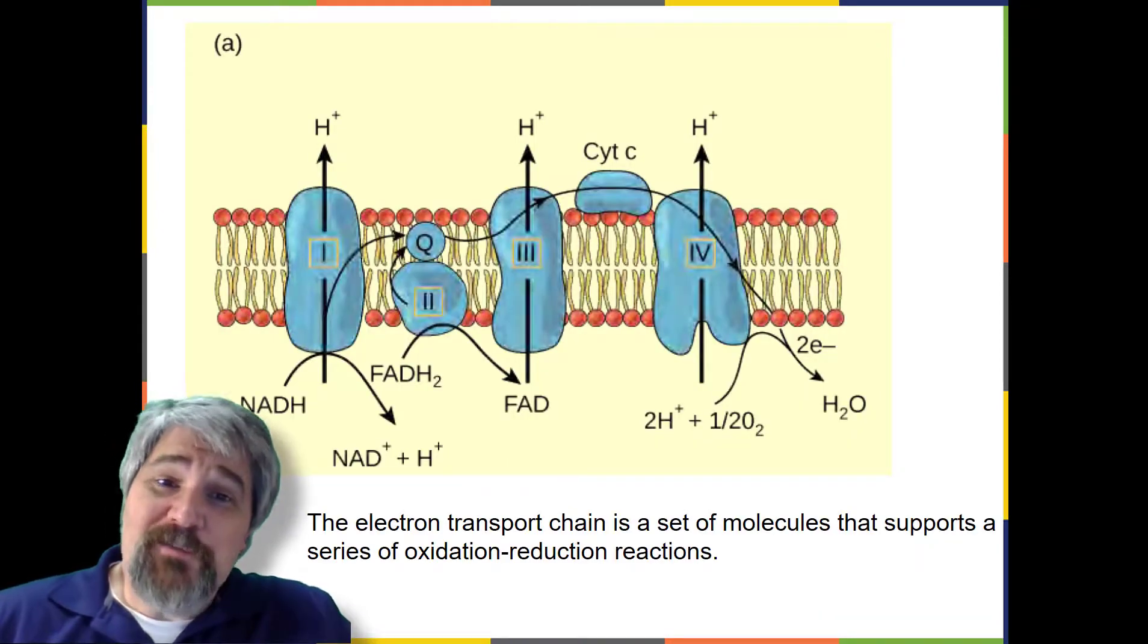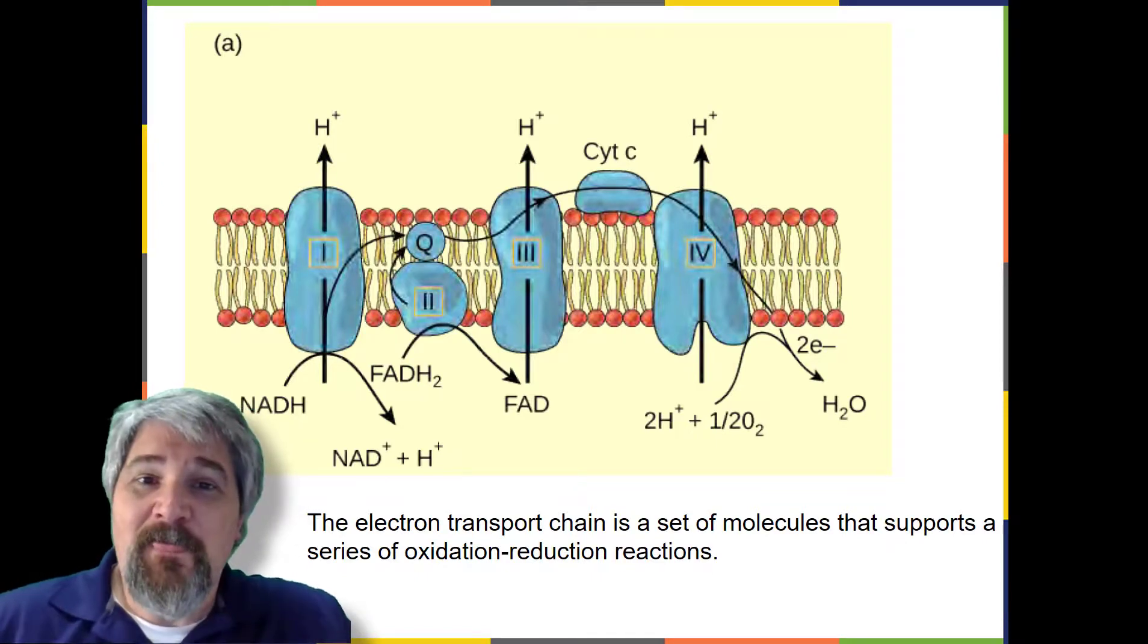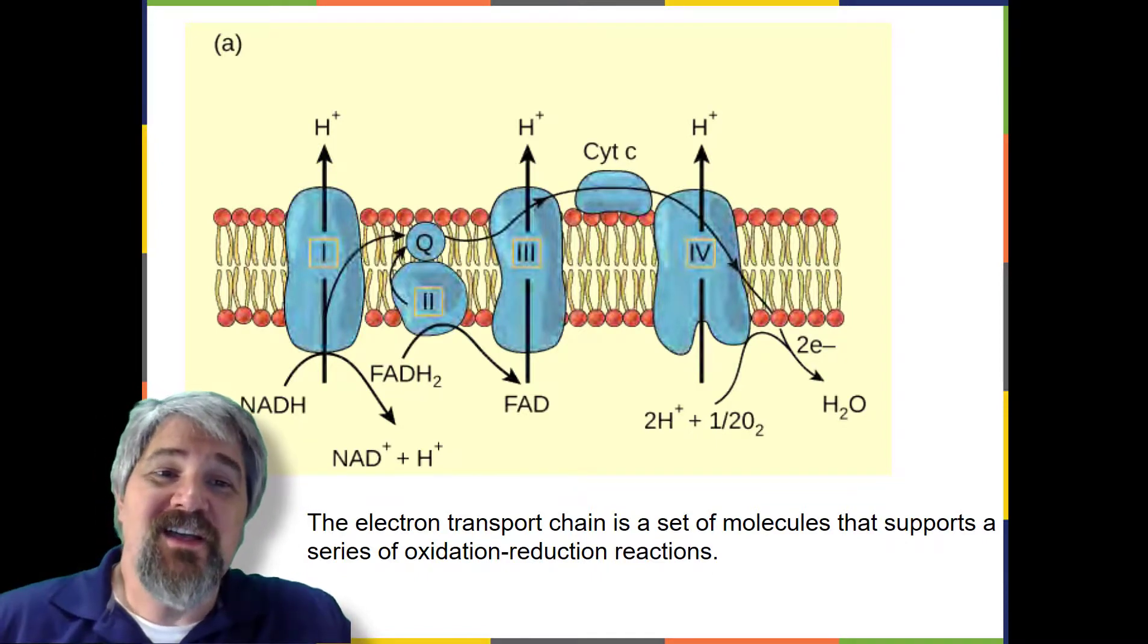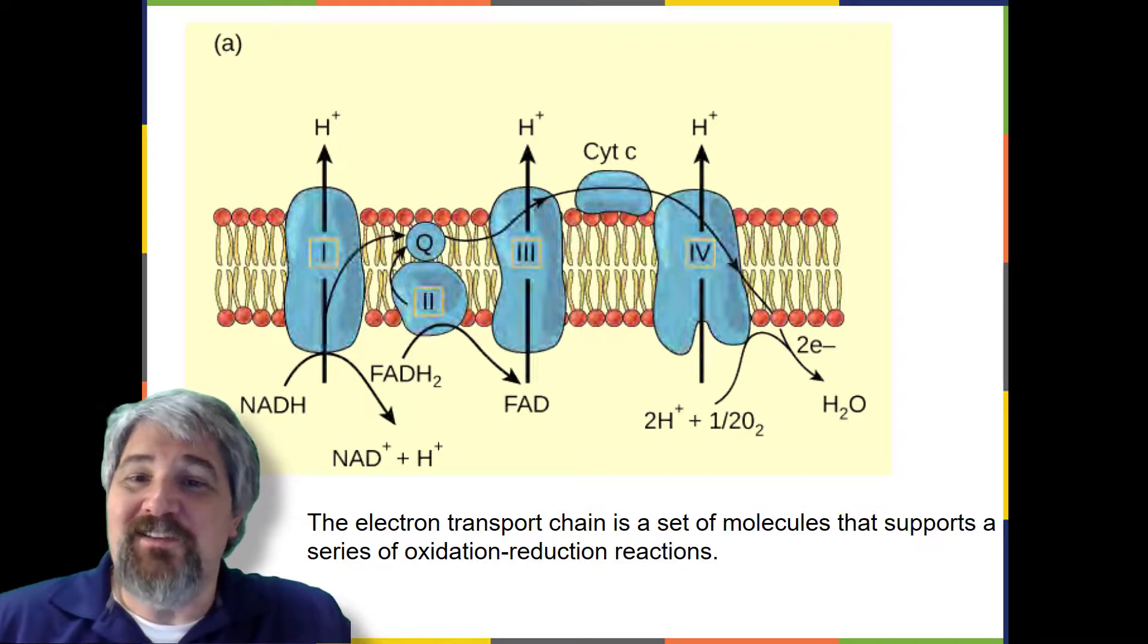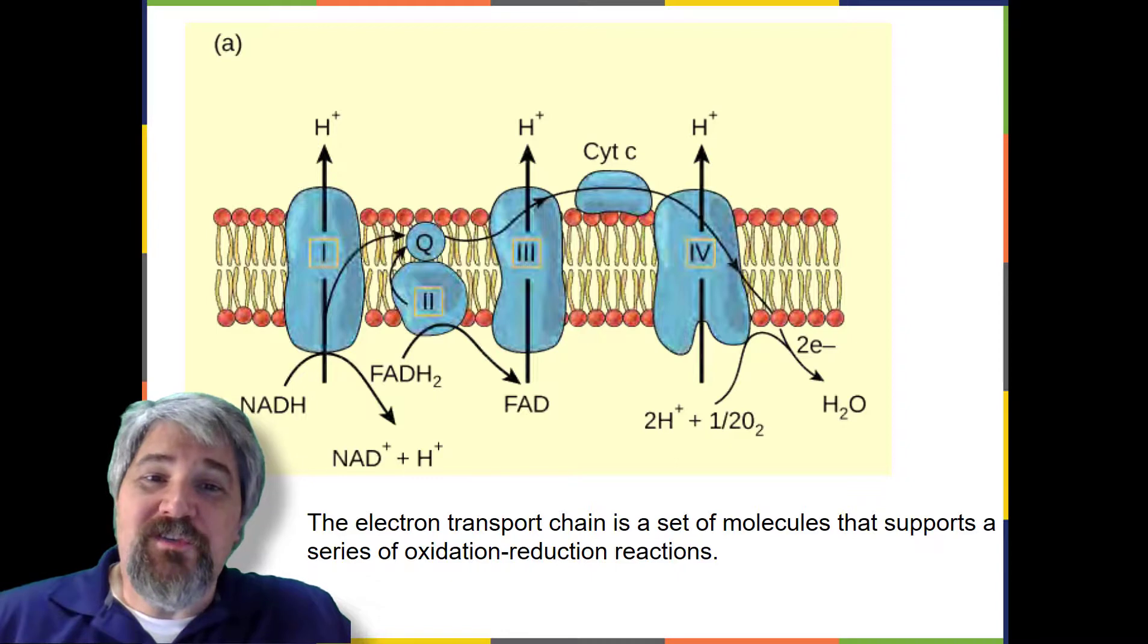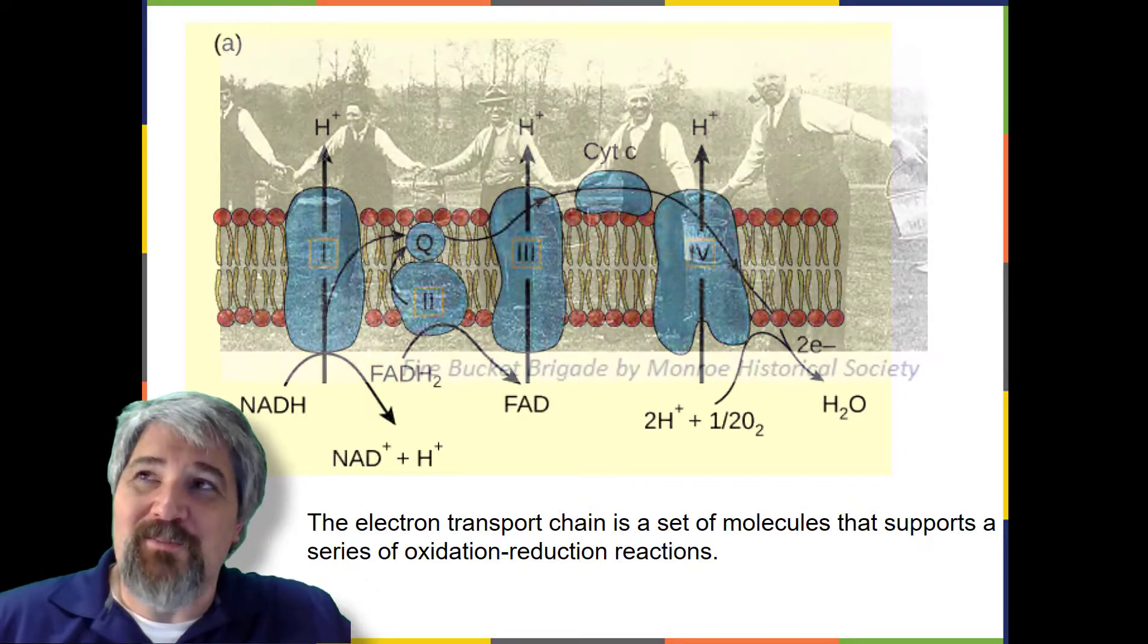The electron transport chain, pictured here, is the last component of aerobic respiration and is the only part of metabolism that uses atmospheric oxygen. Oxygen continuously diffuses into plants for this purpose. In animals, oxygen enters the body through the respiratory system.